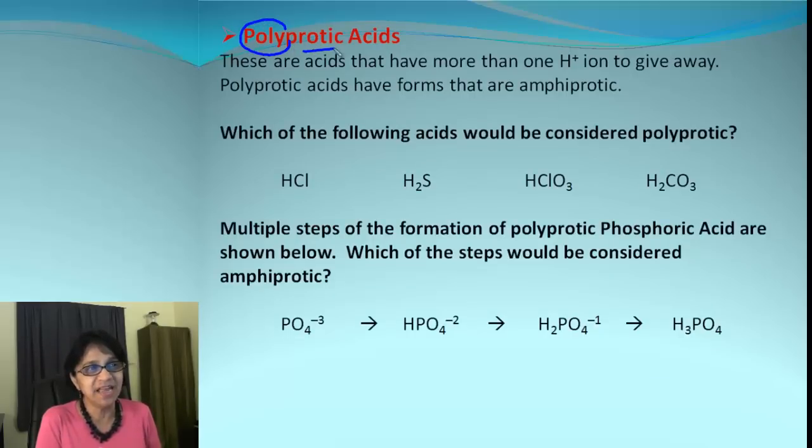As the word suggests, poly means many and protic means proton. And proton in case of acid means hydrogen ion. So acids which have many protons and many hydrogen ions will be called polyprotic acids. Let's see which one of these are polyprotic acids.